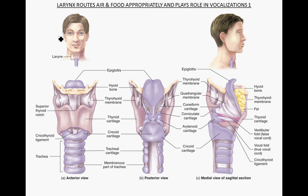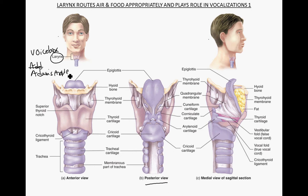Here we have an anterior view, a lateral view, and a posterior view of the larynx. The larynx is sometimes known as the voice box or the Adam's apple. You can palpate this, and what you're feeling is the thyroid cartilage. The thyroid cartilage is more prominent in males than in females, because testosterone has a positive effect on the hyaline cartilage that makes up that thyroid cartilage. It forms the anterior portion of the larynx.